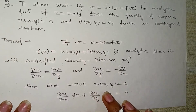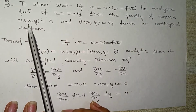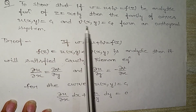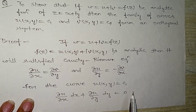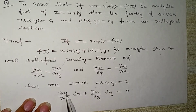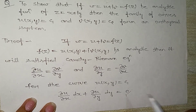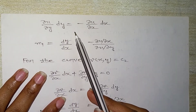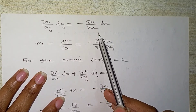For the curve u(x,y) = c₁, we will partially differentiate. We get: (∂u/∂x)dx + (∂u/∂y)dy = 0, since c₁ is constant. So (∂u/∂y)dy = −(∂u/∂x)dx, which gives us dy/dx = −(∂u/∂x)/(∂u/∂y). This is our slope M₁.